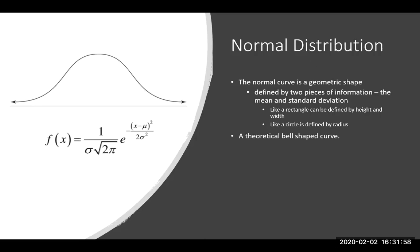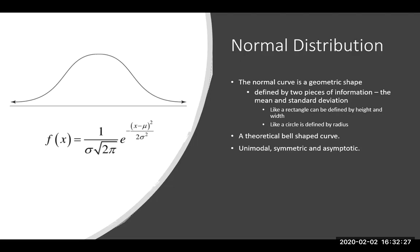You'll often hear the normal distribution called the theoretical bell-shaped curve — books and websites often cite that. I won't be calling it a bell-shaped curve, because that phrase was coined by a man who wrote a book with very racist ideas, and I don't want to give him any credit. I recognize it looks like a bell, but I'm going to call it a normal curve.